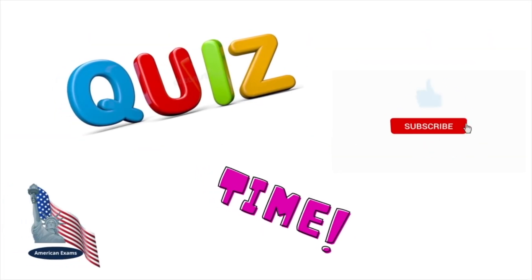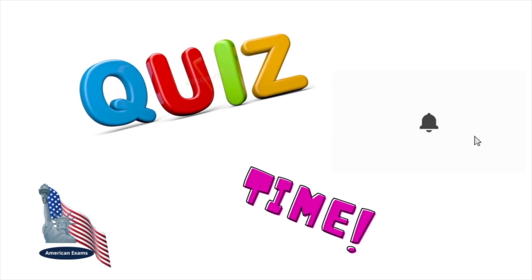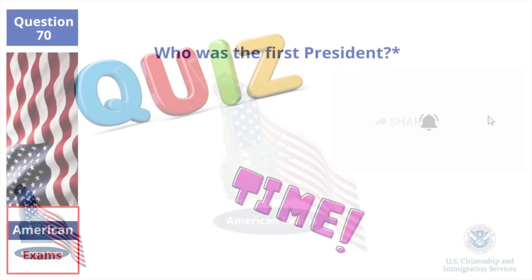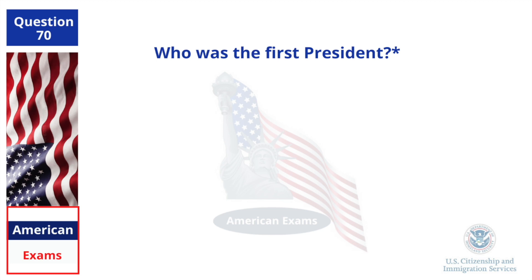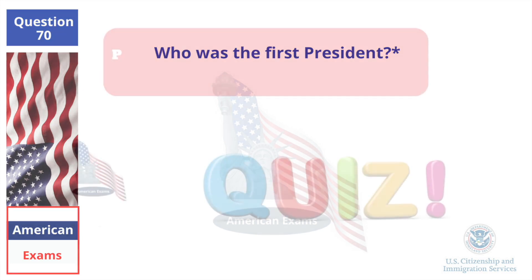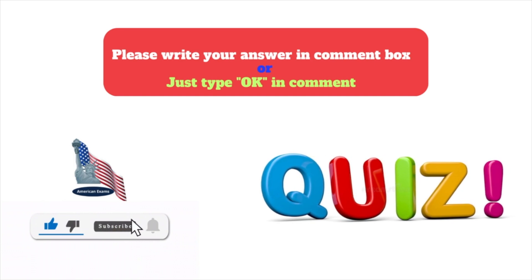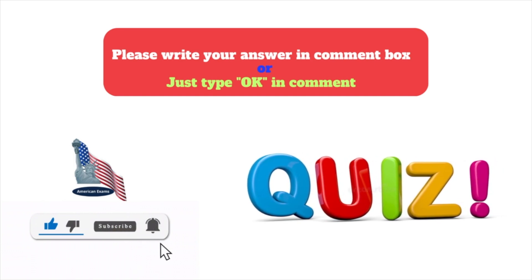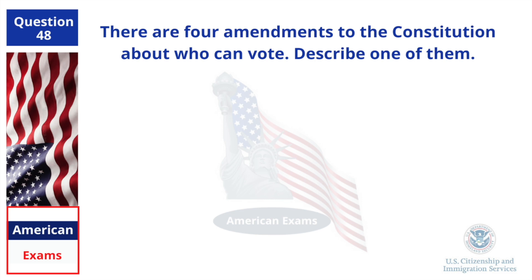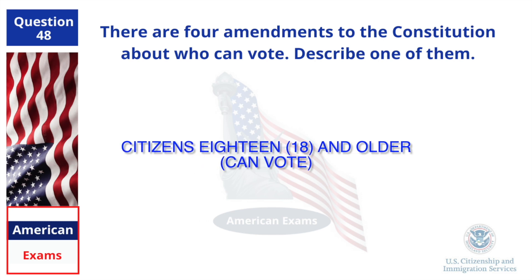Dear learner, let's have a quiz for you. Please write your answer in the comment box. Who was the first president? There are four amendments to the Constitution about who can vote. Describe one of them. Citizens 18 and older can vote.